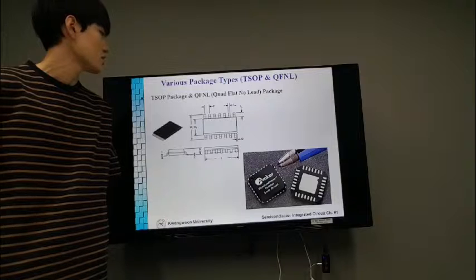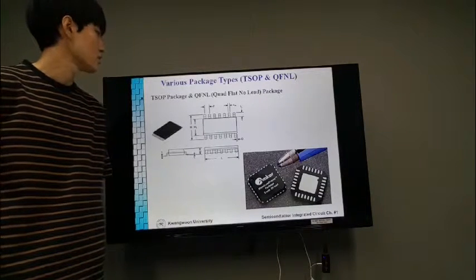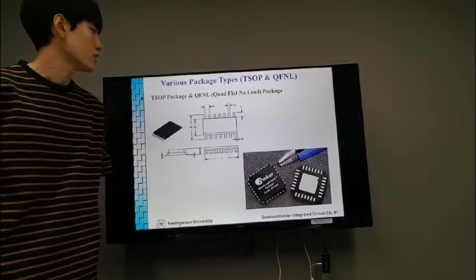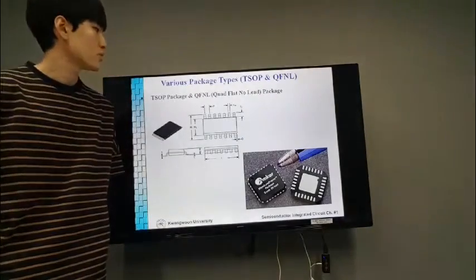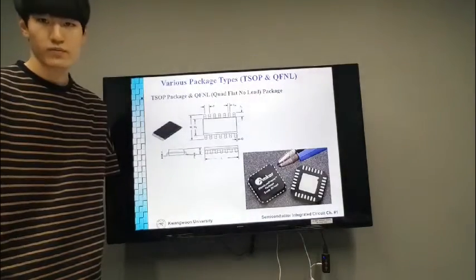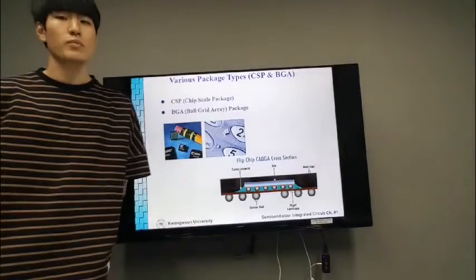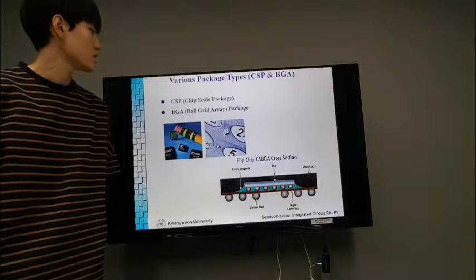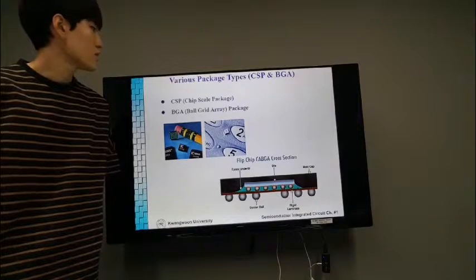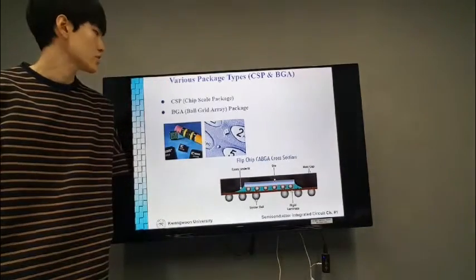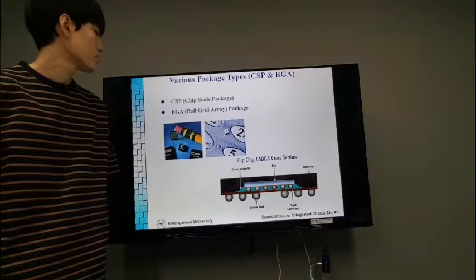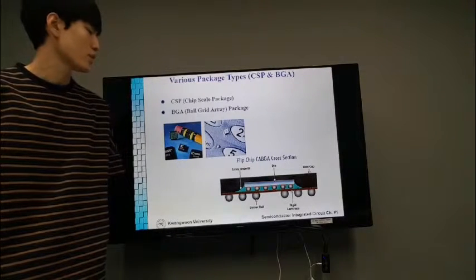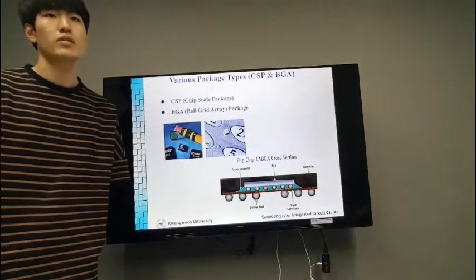The TSOP package is smaller and thinner than the DIP package. DIP means dual in-line package. This package is used better than DIP in the mobile system. Because the size of the circuit board is becoming smaller, more smaller package is needed. The CSP means chip scale package, meaning that the size of the package is similar to the size of the chip. The BGA means ball grid array, meaning that using solder ball. This solder ball performs both die attachment and wire bonding, so this package is convenient and simple.